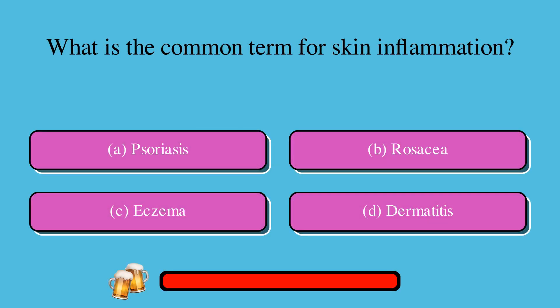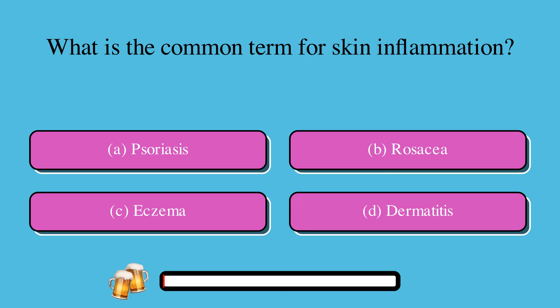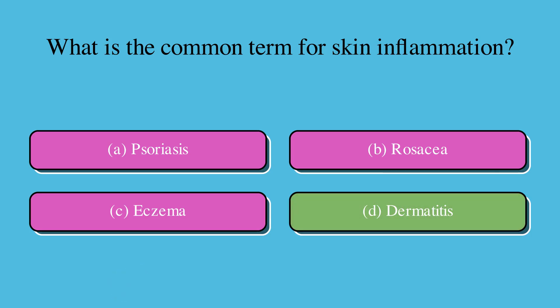What is the common term for skin inflammation? A. Psoriasis, B. Rosacea, C. Eczema, or D. Dermatitis. The correct answer is D. Dermatitis.